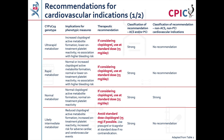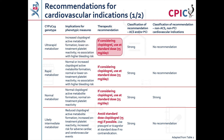These are the CPIC dosing recommendations for clopidogrel in cardiovascular indications. Patients who are CYP2C19 ultra-rapid metabolizers have increased formation of the active metabolite of clopidogrel and lower on-treatment platelet reactivity. These patients can receive the standard dose of clopidogrel. This is a strong recommendation for patients being treated for ACS or PCI. No recommendation is given for CYP2C19 ultra-rapid metabolizers being treated for non-ACS or non-PCI cardiovascular indications.